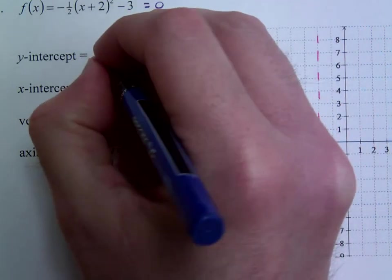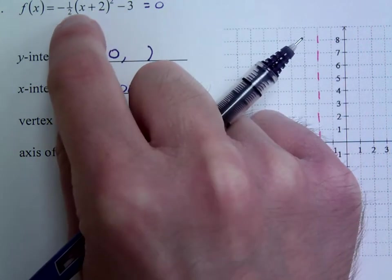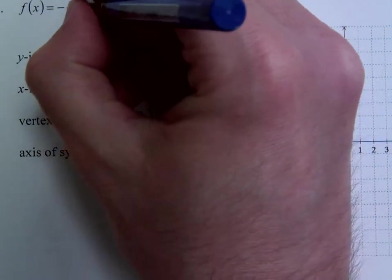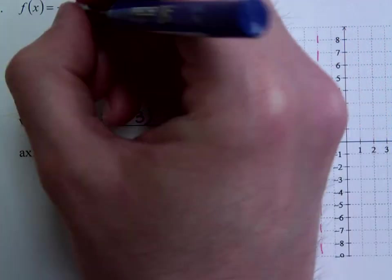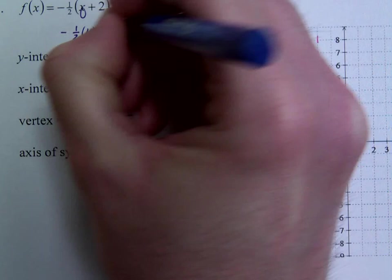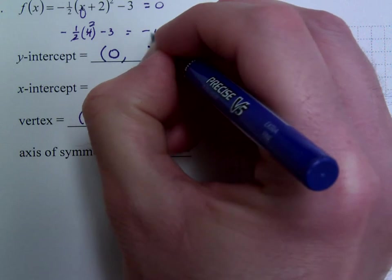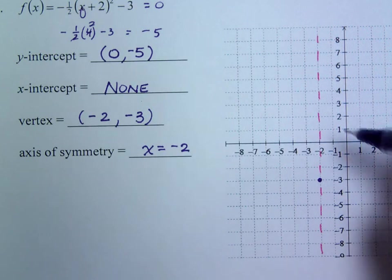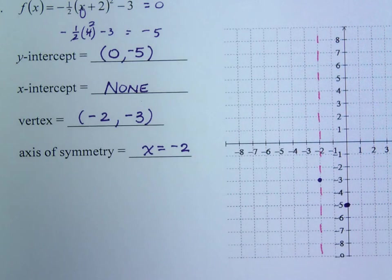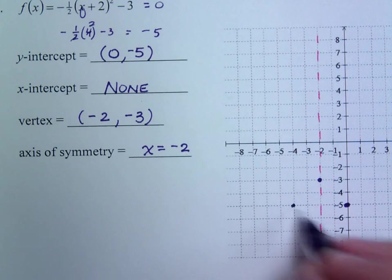Now, the y-intercept. This is always when x is 0. If I plug in 0 here, 0 plus 2 is 2. So 2 squared is 4. So you have negative 1 half times 4 minus 3. So 2 goes in here twice. And this gives you negative 5. Hopefully that makes sense and we do end up hitting here at negative 5. There's your y-intercept. But since you have this line of symmetry, you can reflect it across the line of symmetry and have another point here.